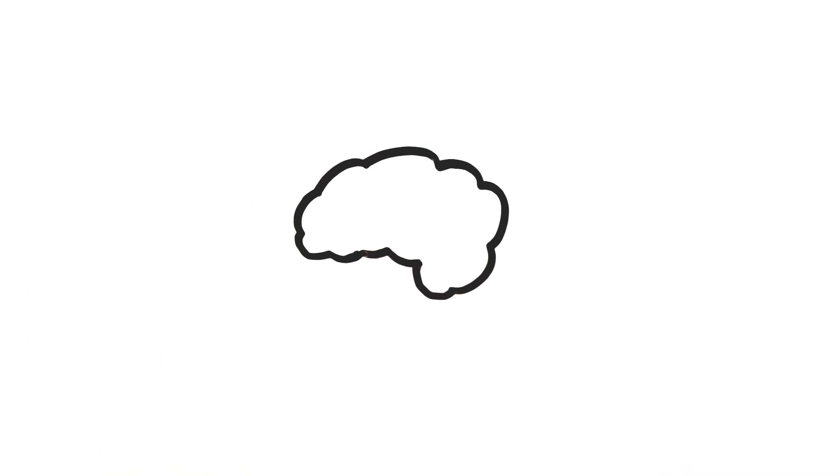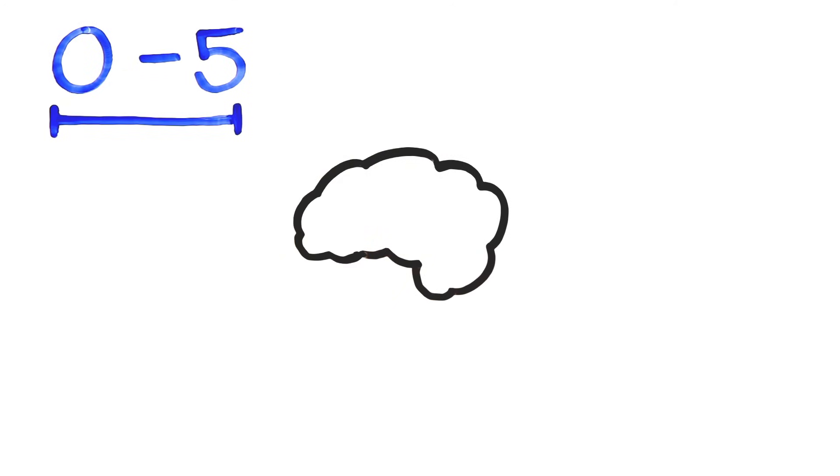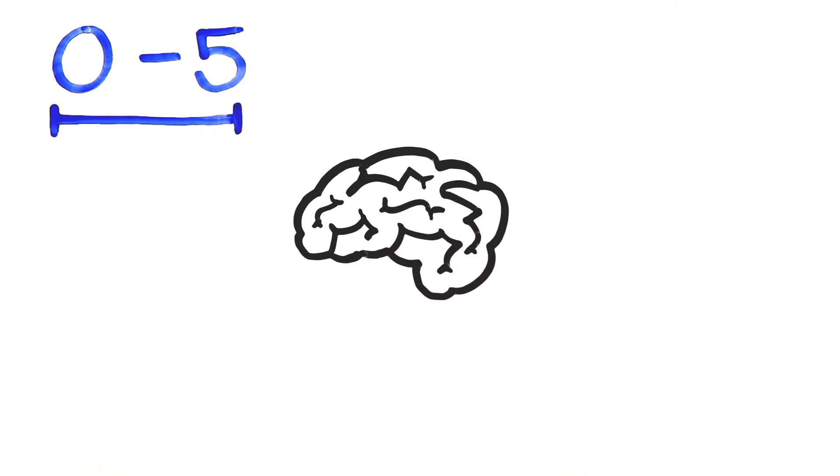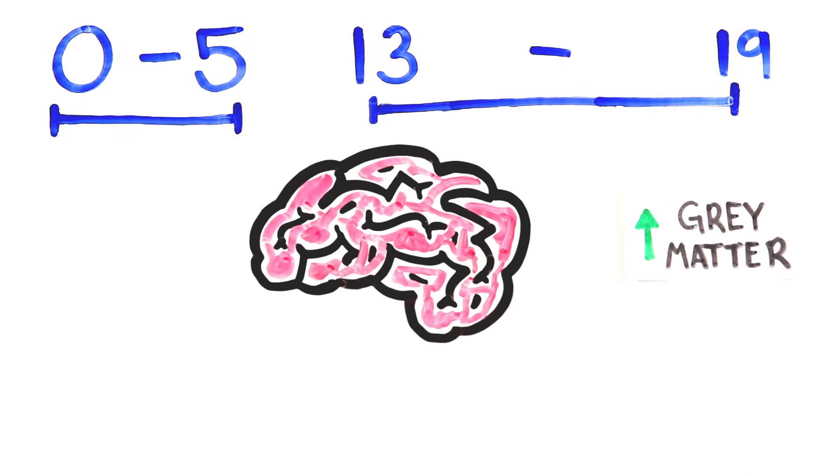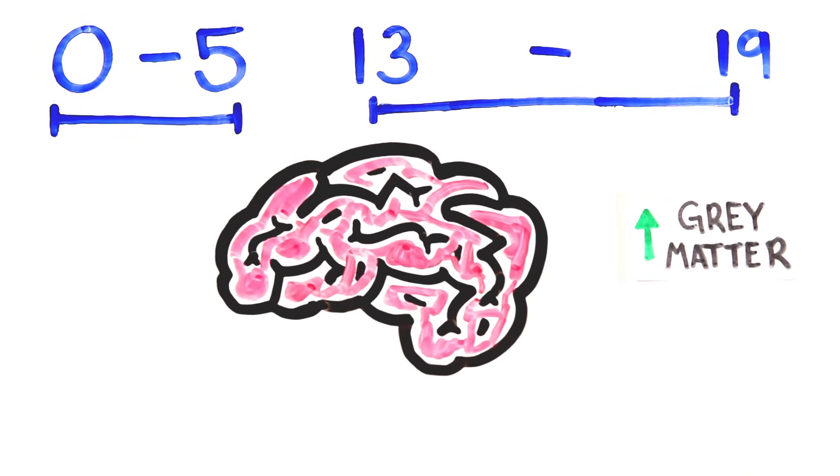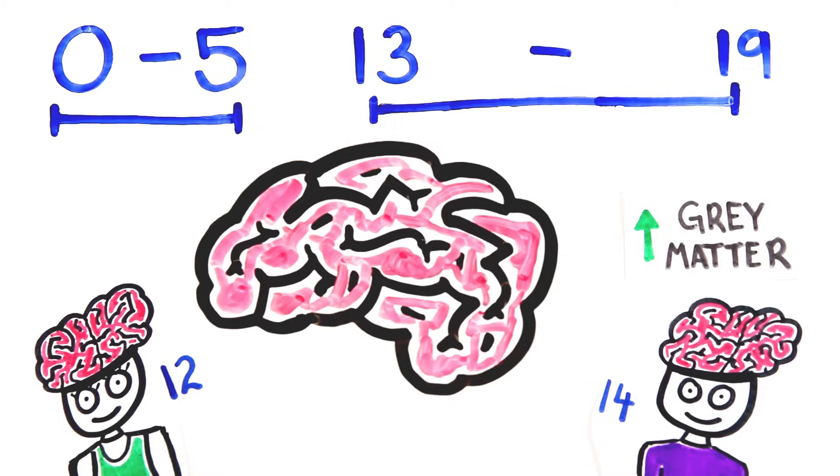We're often told that the most important years of brain development are between 0 and 5 years old, although recent research has found adolescent development to be equally important. During childhood, our brains continually grow, generating gray matter until they reach their maximum size, which for girls is around age 12 and boys around age 14.